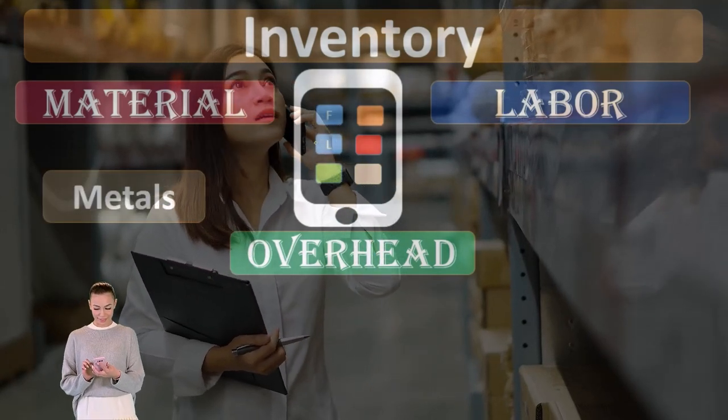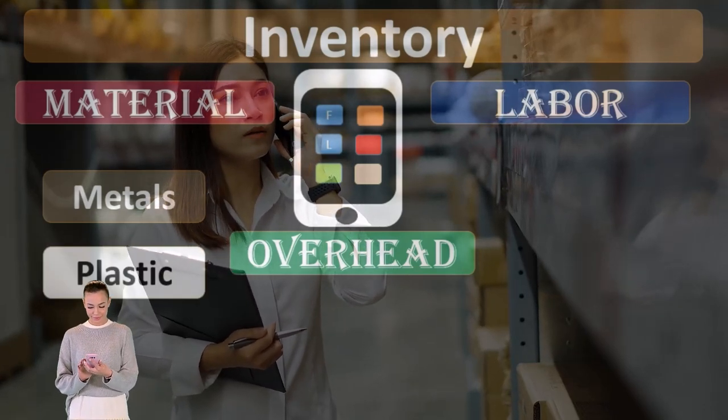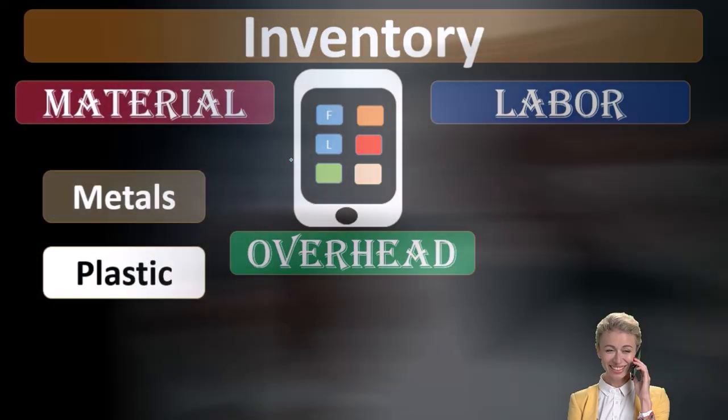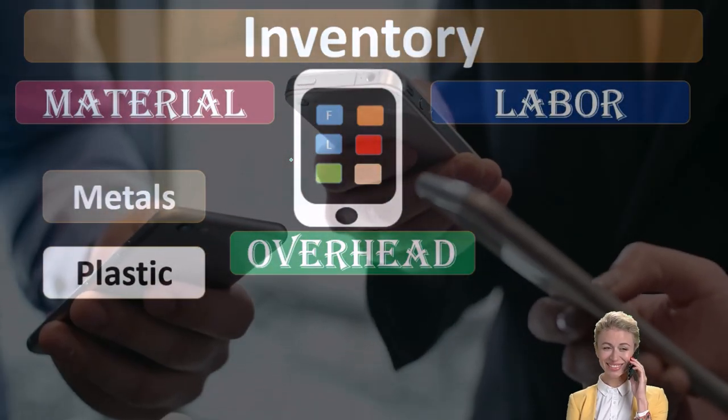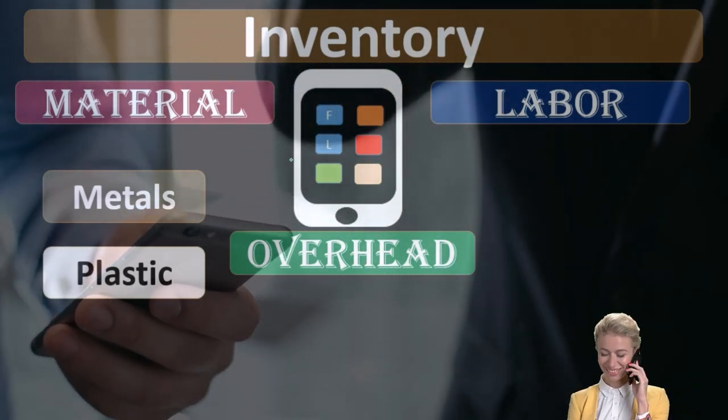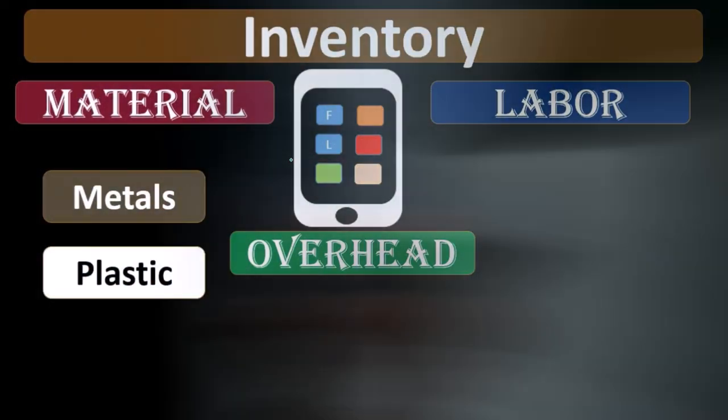For example, the direct materials could include the metals involved here as well as the plastic that would be involved in this tablet. Those would be the things that are physically part of this end product and are also things that we can trace directly to that particular product or that particular process depending on the type of system we are using.